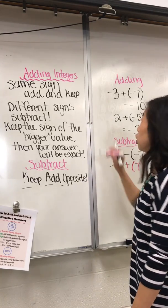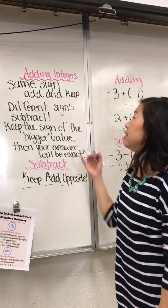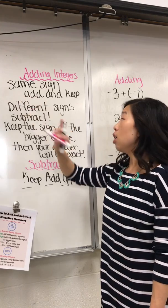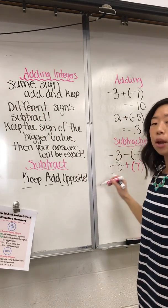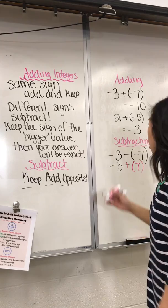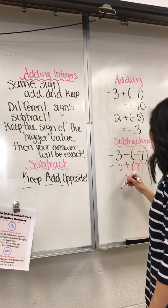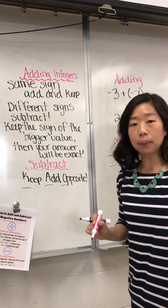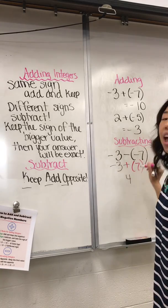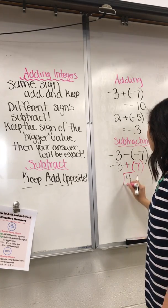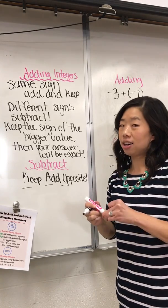Now I can go back to my adding integer rule and decide is it same sign or is it different? Well, in this example, it's a different sign. So I'm going to subtract. Seven minus three is four. The larger absolute value is going to be seven and seven is positive. So my answer is going to be positive four.